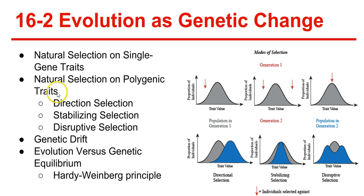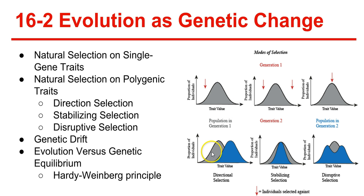Natural selection on polygenic traits can affect the distribution of phenotypes in three different ways: directional selection, stabilizing selection, and disruptive selection. Directional selection is when individuals at one end of the curve have higher fitness than those in the middle or at the other end. When this occurs, the curve shifts over because individuals at that end are better at surviving and become more frequent in the population.